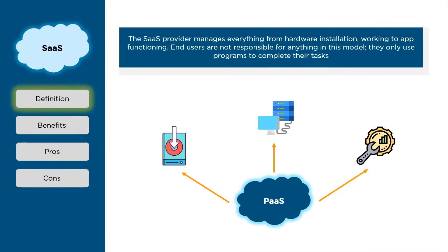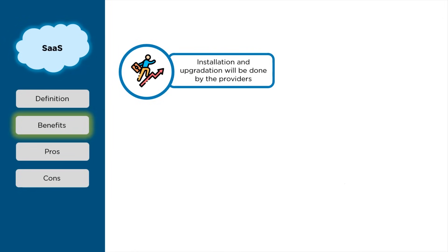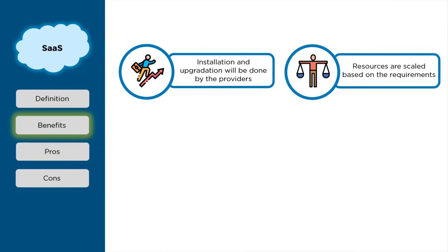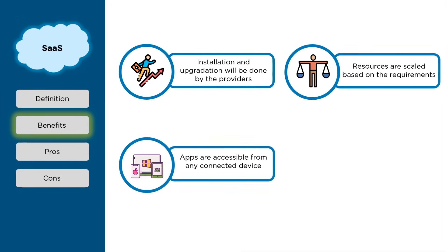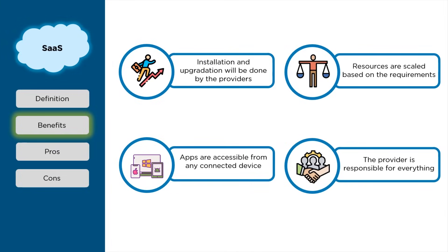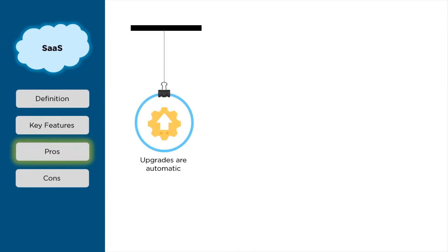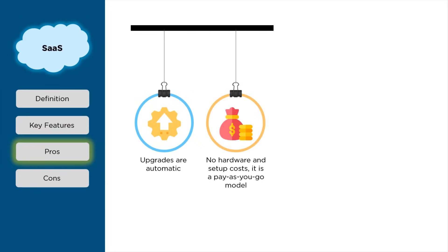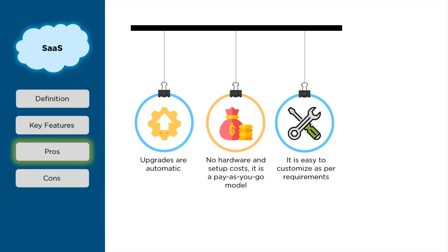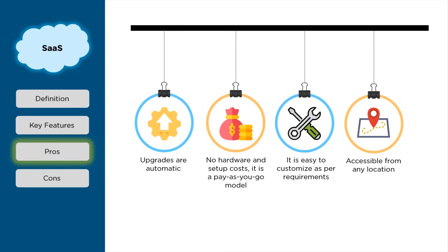In Software as a Service, everything is done by the vendors — end users are only responsible for giving their requirements and everything is done by the providers. Benefits: installations and updates are done by the providers; resources are scaled up and down based on user requirements; only a strong network connectivity is required; and the provider is responsible for everything. Pros: upgrades are automatic; it is a pay-as-you-go model; it is easier to customize than other service models; and it is accessible from any location.